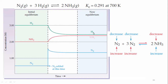At the new equilibrium, the concentration of H₂ is further decreased. The concentration of N₂ decreased after addition but is still more than the initial value because you added extra nitrogen. The concentration of ammonia increased compared to the initial equilibrium. This is the new equilibrium versus the initial equilibrium.